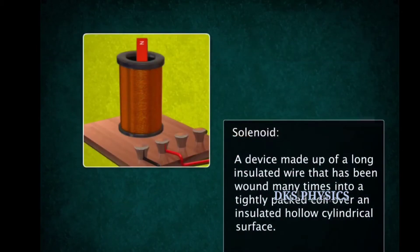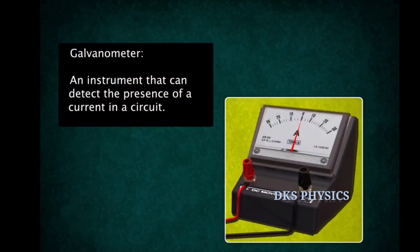Faraday made a solenoid of a large number of turns of copper wire and connected the ends of the wire to a galvanometer.